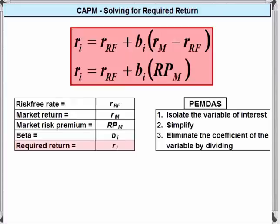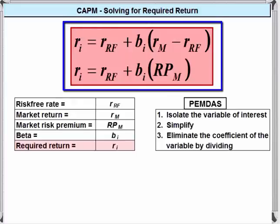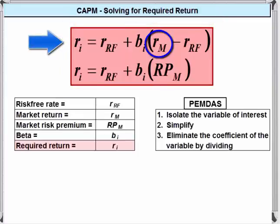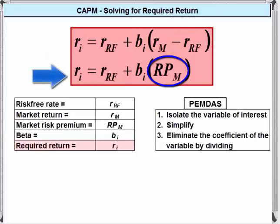Before we get into the solutions, let's look at the basic CAPM formulas. CAPM is typically presented in two forms. The top equation uses the return on the market, RM. The bottom version uses the market risk premium, RPM, which is the return on the market minus the risk free rate.